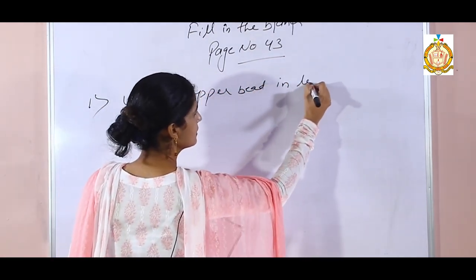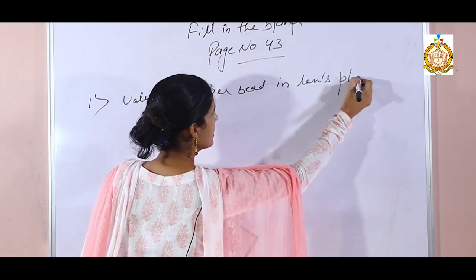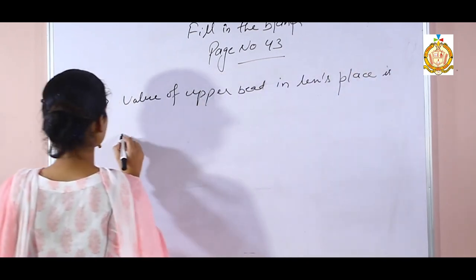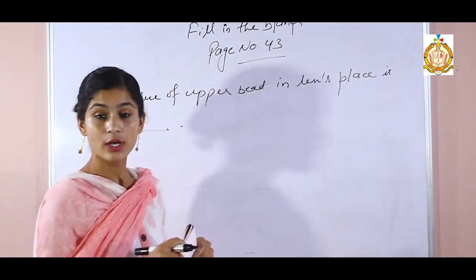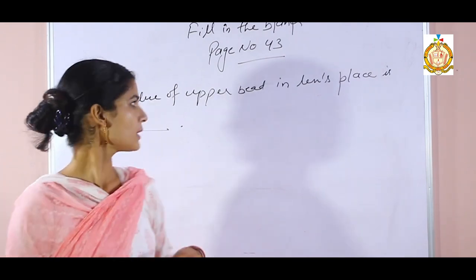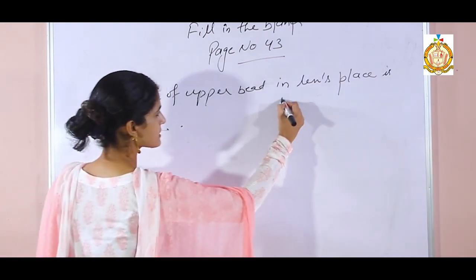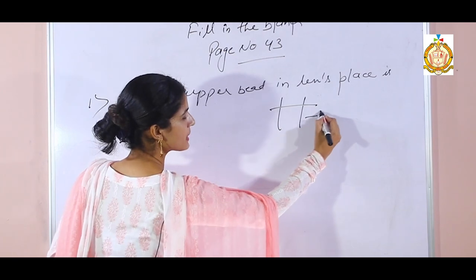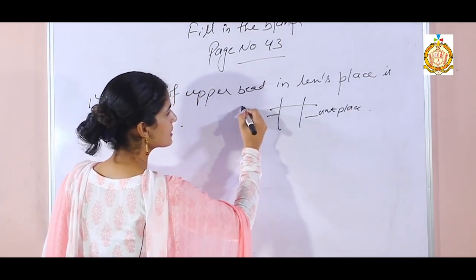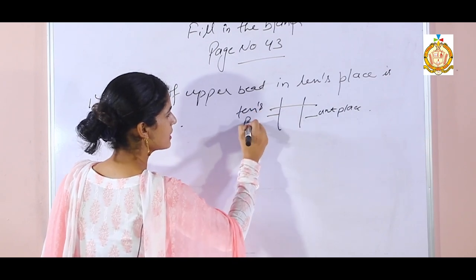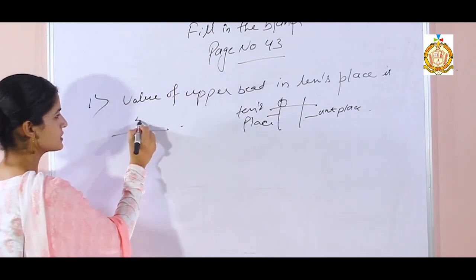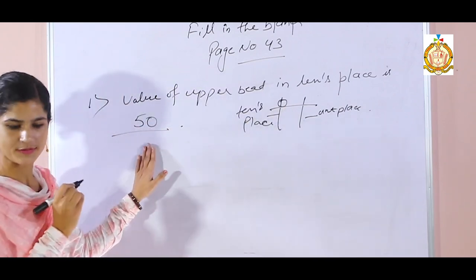Value of upper bead in tens place. We know that the second rod is called the tens place. The value of the upper bead in tens place is 50. So write here: 50.